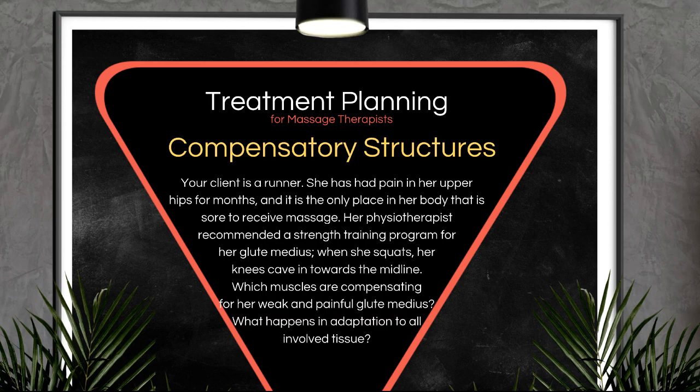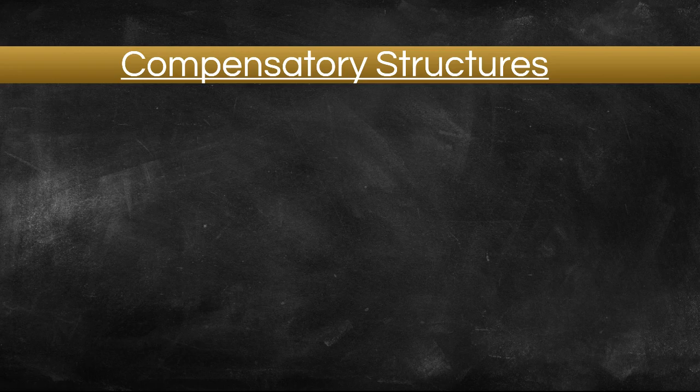Scenario number two: your client is a runner. She has had pain in her upper hips for months, and it is the only place in her body that is sore to receive massage. Her physiotherapist recommended a strength training program for her glute medius. When she squats, her knees cave in towards the midline. Which muscles are compensating for her weak and painful glute medius, and what adaptations are happening in all involved tissue? There are two things going on here: compensation while she squats, as well as the pain she feels while she runs.